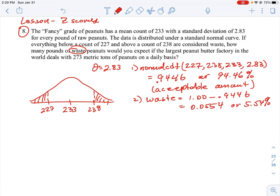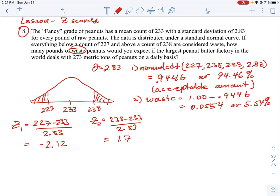Another way to do this question could be to calculate the Z-score for each of these values. So we could say the lower Z-score z₁ equals 227 minus 233 all over 2.83, and the higher Z-score equals 238 minus 233 over 2.83. We're going to see our lower Z-score is -2.12 and the higher score is 1.77.